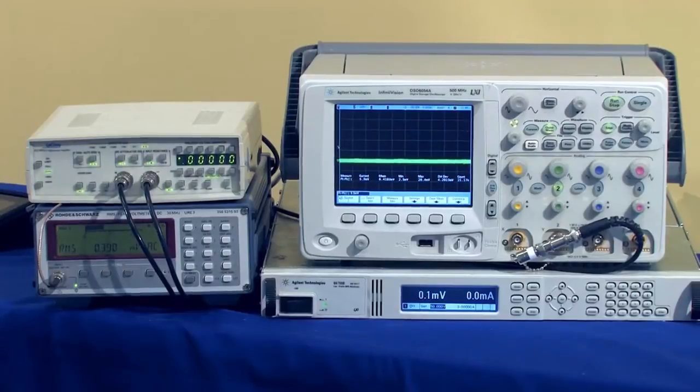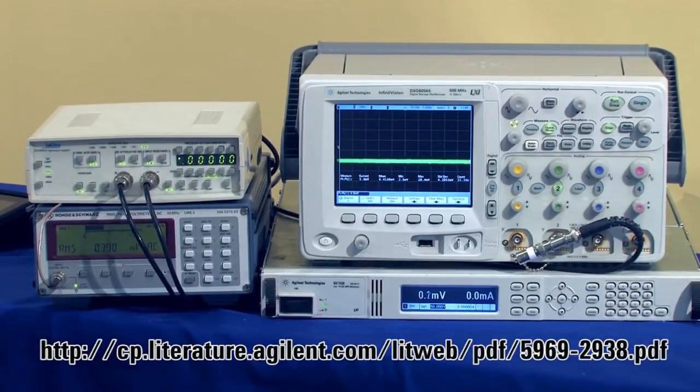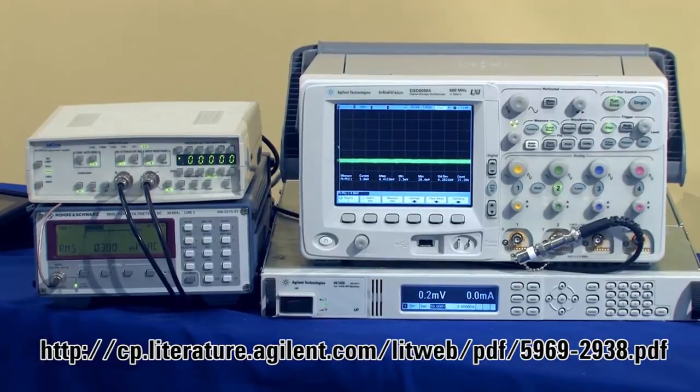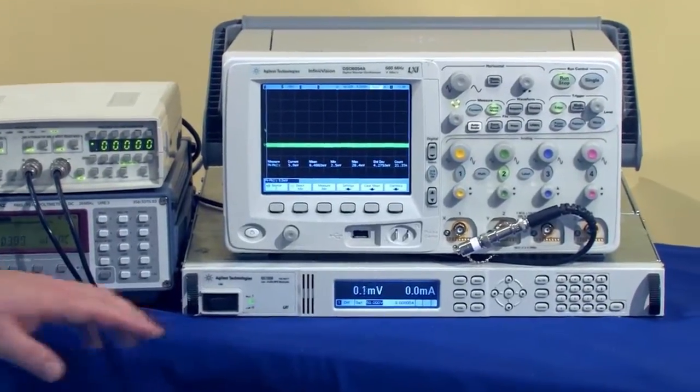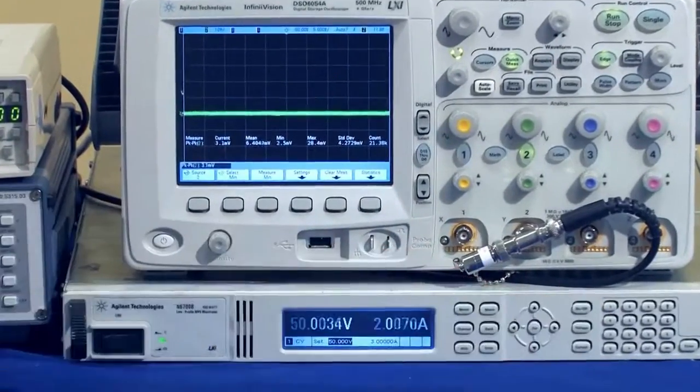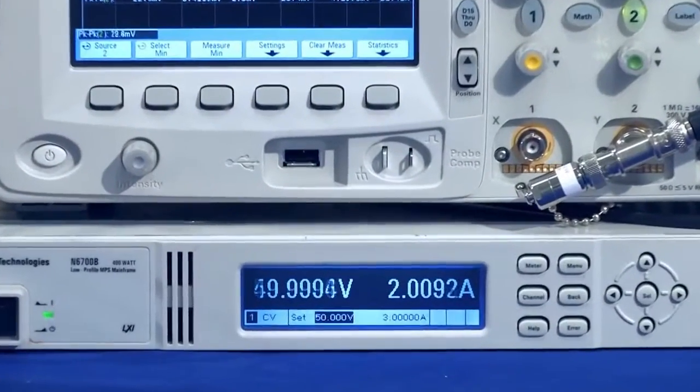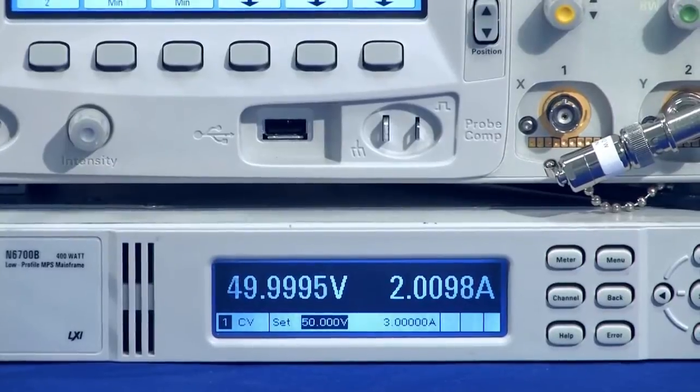All the equipment has been preset for this test. You can find all the required settings in the service manual, which is on the web. What we're going to do now is turn the power supply on by pressing the on-off button and wait for a few seconds for the scope to settle.